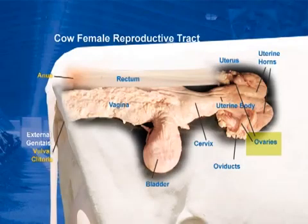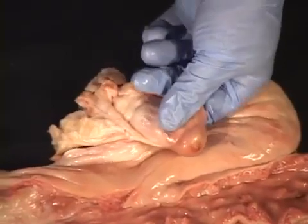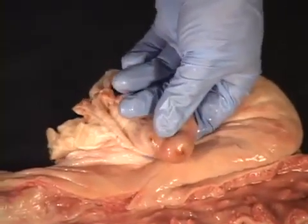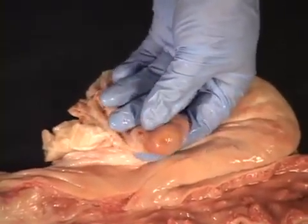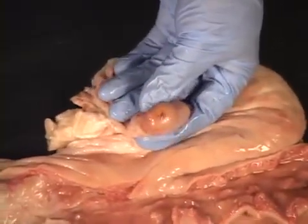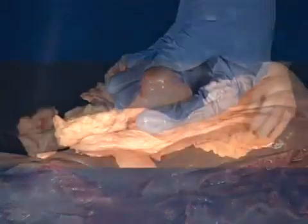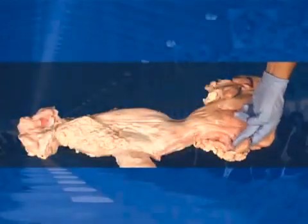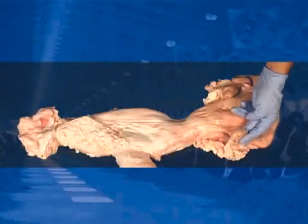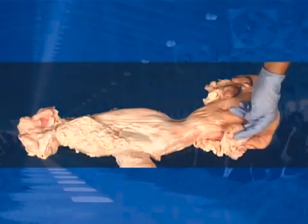Ovaries: they are approximately one and a half inches in length, one inch in width, and one half inch in thickness. Their main function is to produce eggs and to secrete hormones — estrogen and progesterone.